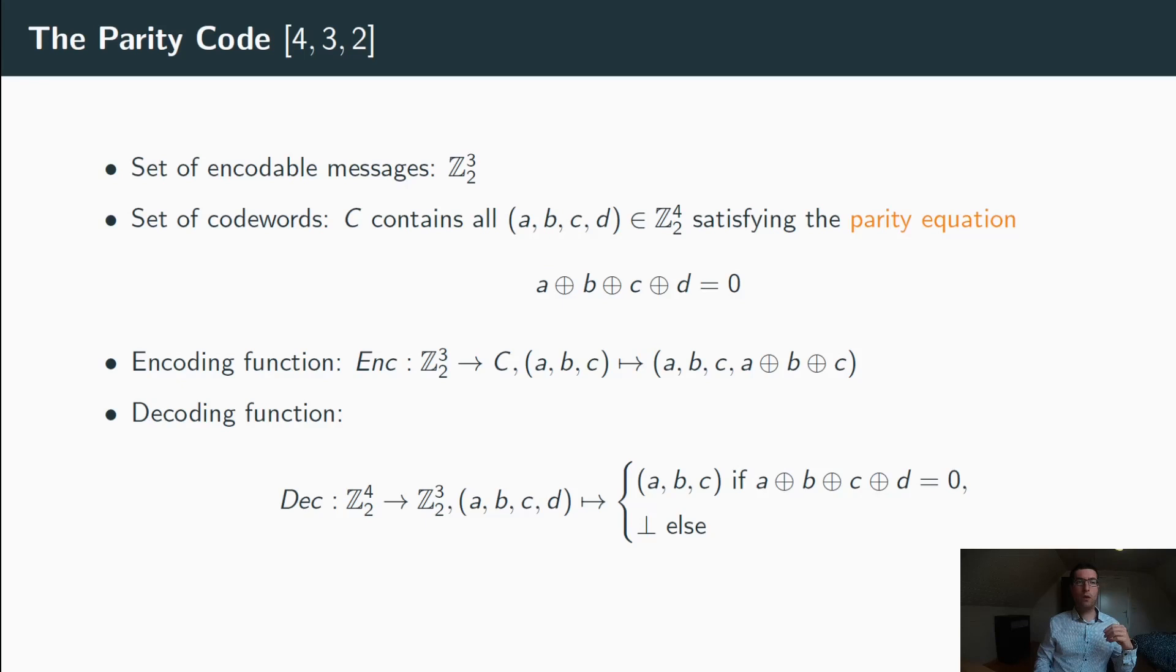The error-detecting code that we used for our permutation is the parity code of 432. It maps any 3-bit message to a 4-bit value that has the event parity. In other words, this 4-bit value that we will denote with ABCD must satisfy the parity equation A XOR B XOR C XOR D equals 0. In order to encode a message ABC, you just then need to add to it a fourth bit D equal to A XOR B XOR C.